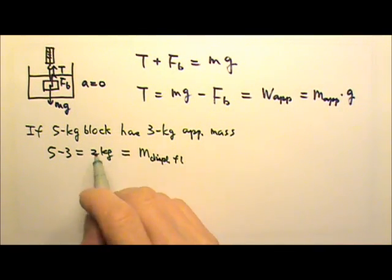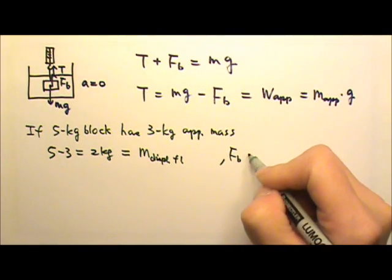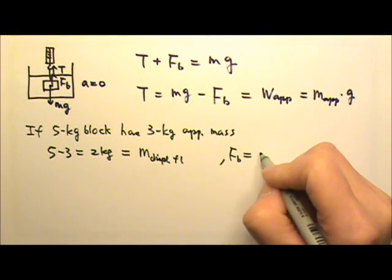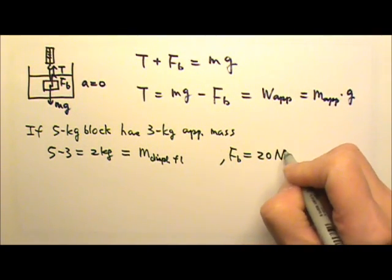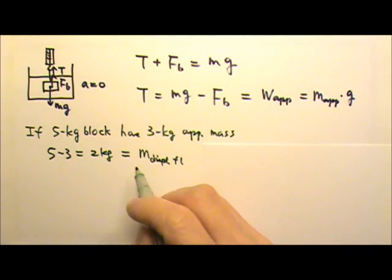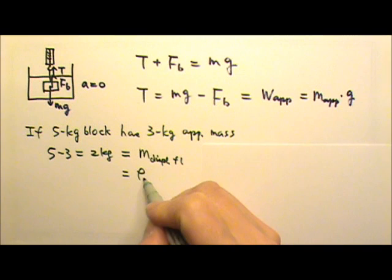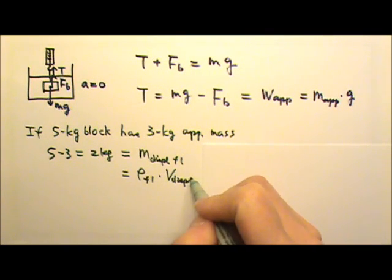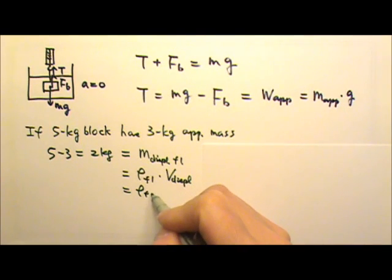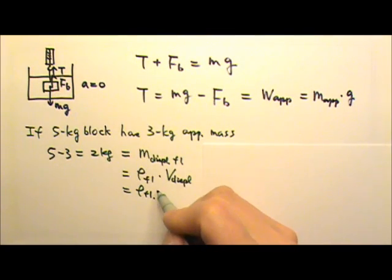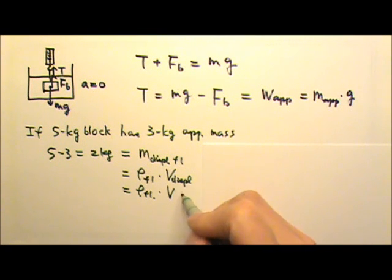This also means that the buoyant force itself would be the weight of the 2 kg, so it's 20 N. And of course, the mass of the displaced fluid is the density of the fluid times the displaced volume. In this particular case, because the entire block displaces the fluid, the displaced volume is the volume of the block.